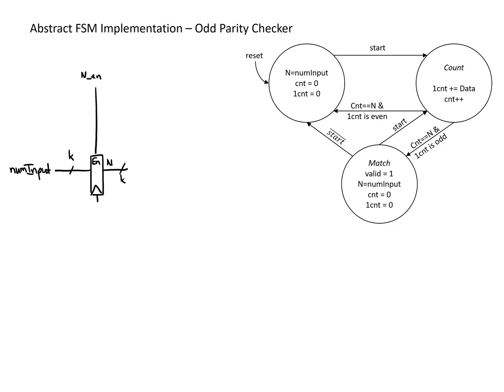We also need two different counters. One counter is going to be compared to the value of n, so we'll look at this one first. For a counter we basically need a register to hold the value, and then an adder to increment it. We take the current value and feed it back into the adder. This is the count counter — it increments any time it's enabled, so we add 1 to it.